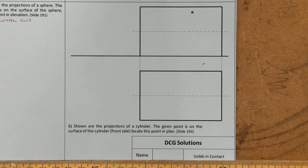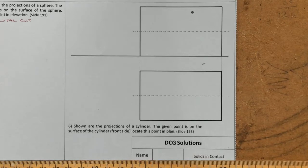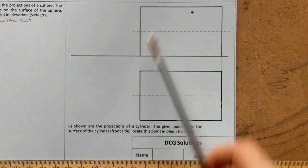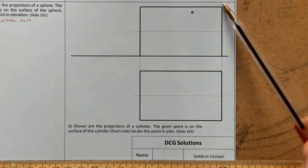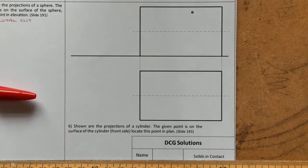Last question on this page — so far we've done the cone and the sphere, now we're moving on to the cylinder. Question six: shown are the projections of a cylinder, the given point is on the surface of the cylinder front side — locate this point in plan. When you look at a cylinder you see a rectangle in elevation, or possibly a square depending on height. In this case we have a rectangle, and the cylinder appears to be on its side.